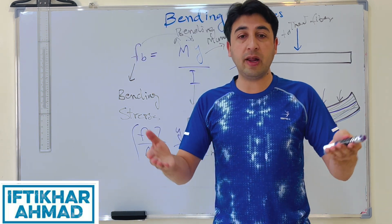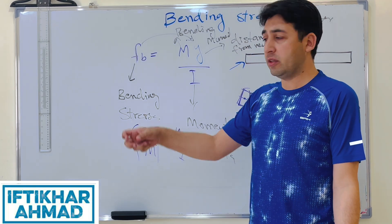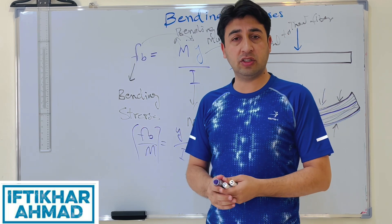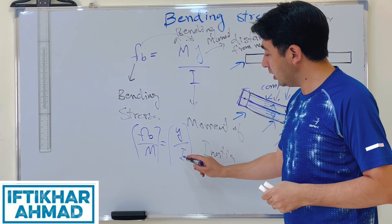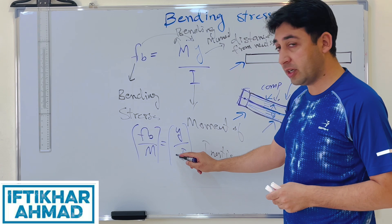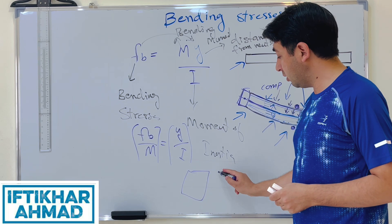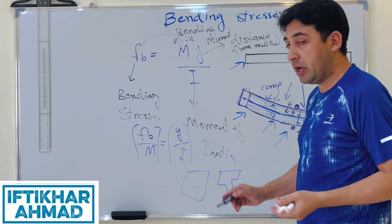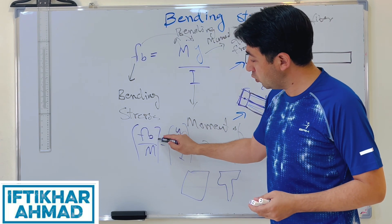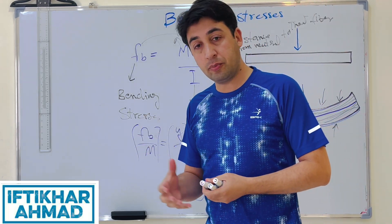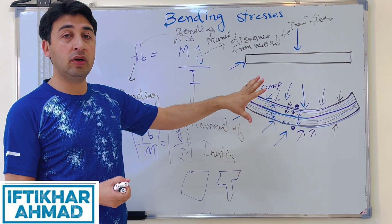If you know the load applied to the beam, you can find the bending moment. If the allowable stress for the material is given, you can rearrange the formula to select an appropriate cross-section geometry. You play with the geometrical properties Y and I — which must satisfy fb / M — to find the right beam for the scenario.